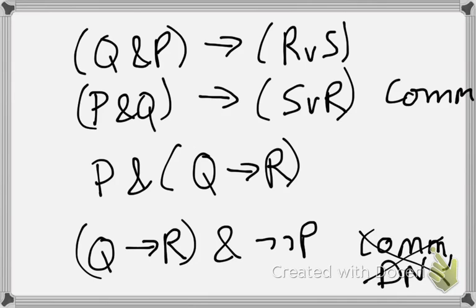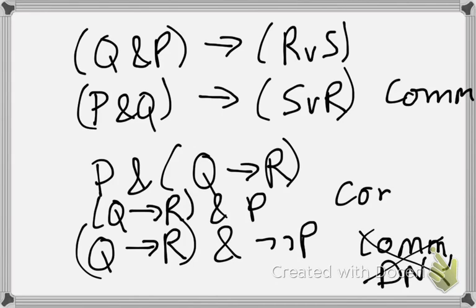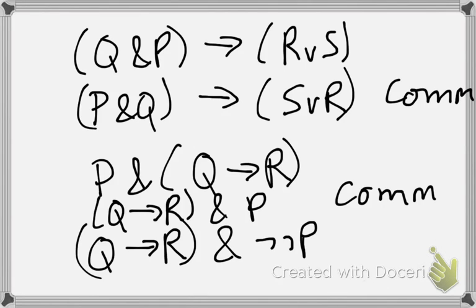So you can do multiple applications of the same rule, but you can't do an application of two different rules at once. So I would have to first do the commutativity part, and then I did the double negation part. That would be fine. That's how you have to do it. If you need to do two different things to a given formula to get whatever you want, then do it in two steps.